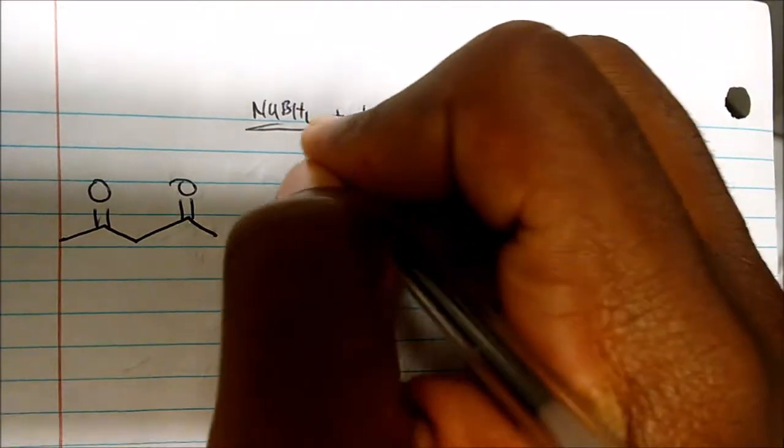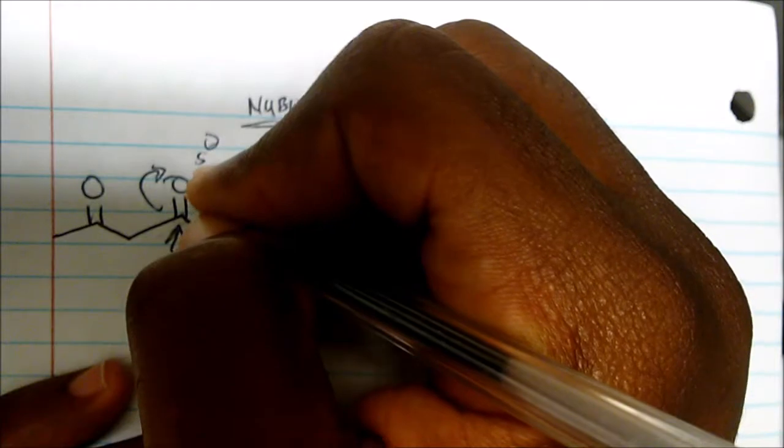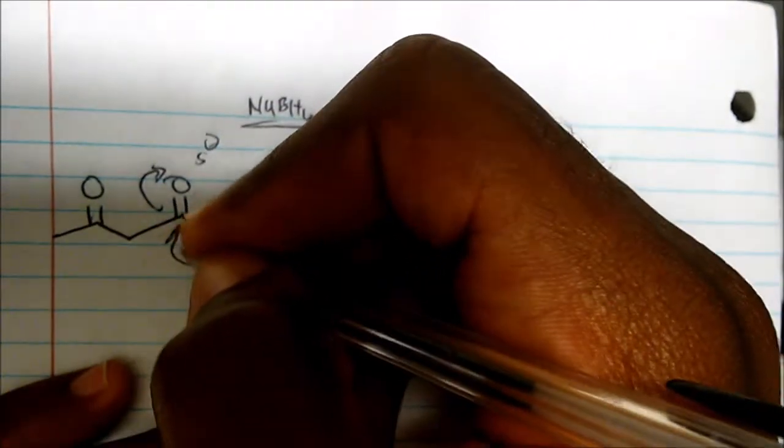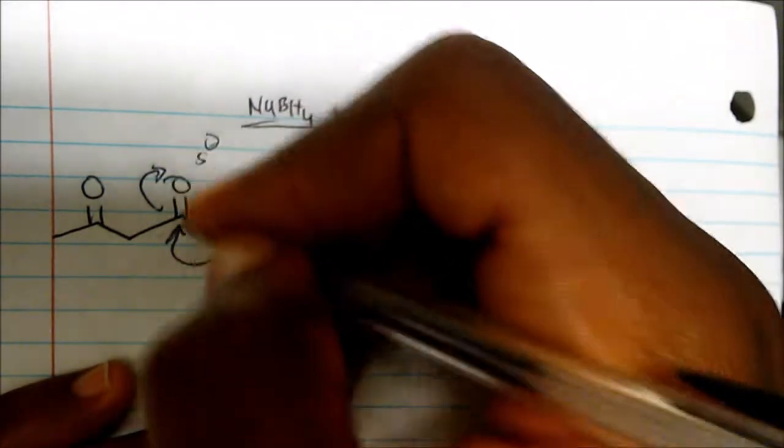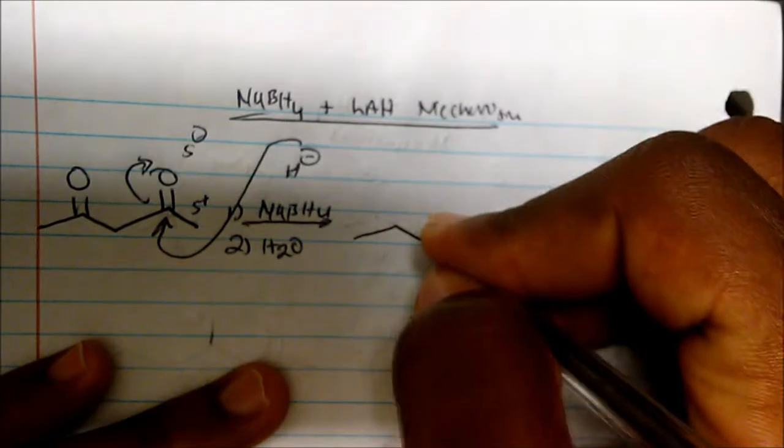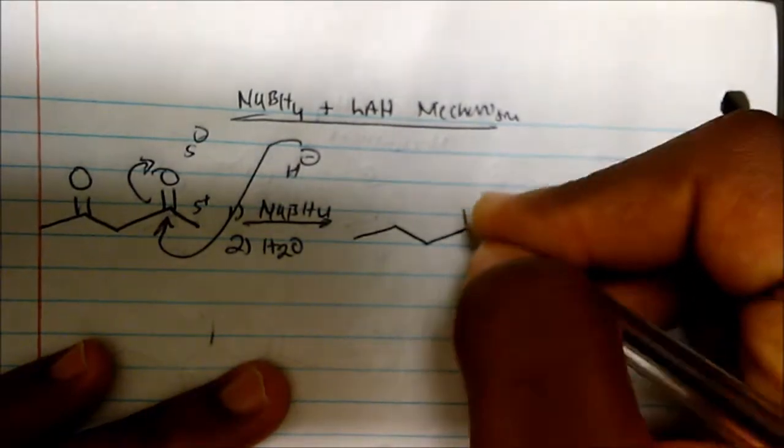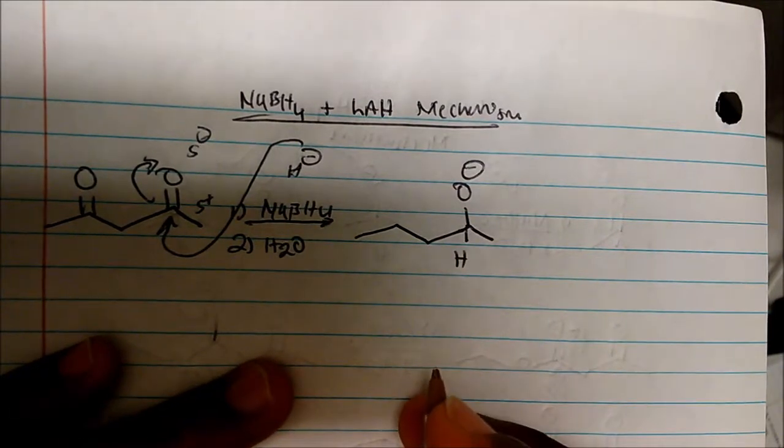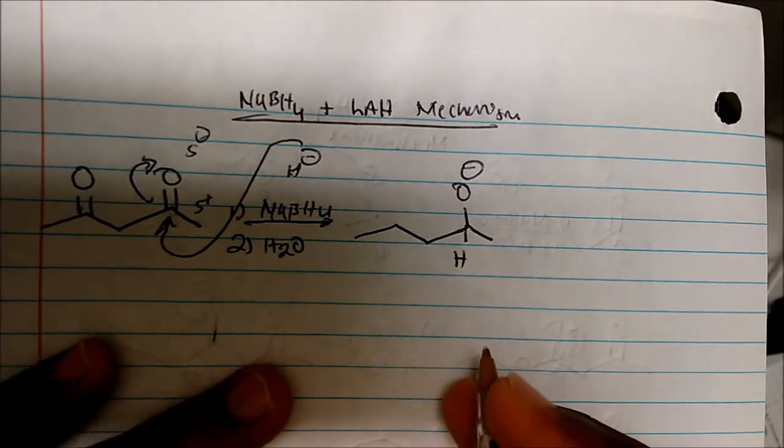The first step in the mechanism: this H minus is going to come attack and these electrons are going to kick off onto the oxygen. This oxygen is slightly electronegative, this carbon is slightly electropositive. It opens up space for attack because the carbon-oxygen bond is very polar. The oxygen withdraws electron density away from that carbon.